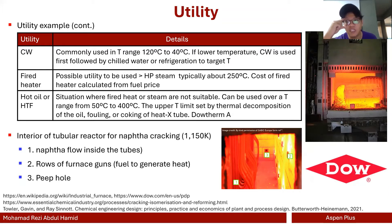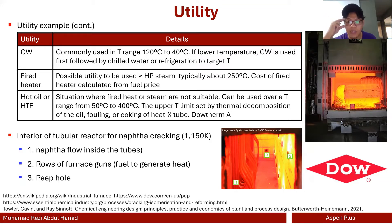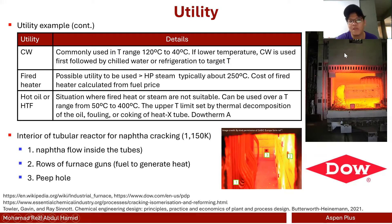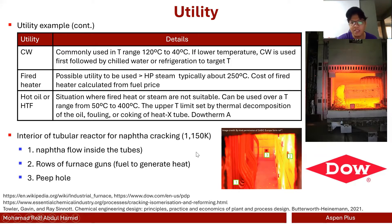A fired heater is basically a furnace — basically fire in hot air. It is something to consider if you need a temperature above the high-pressure steam temperatures, which is around 250 degrees Celsius. This is just an example of a furnace. A furnace is one example of a fired heater — specifically a box furnace. This is the furnace or tubular reactor for naphtha cracking, running at around 900 degrees Celsius.